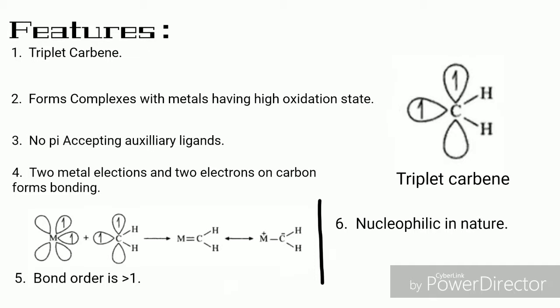These carbenes form by two metal orbitals having two lone electrons in different orbitals and the carbon system. In Schrock carbene, metal carbon bond order is greater than one, and this is due to the electronegativity difference between the metal and carbon atom.